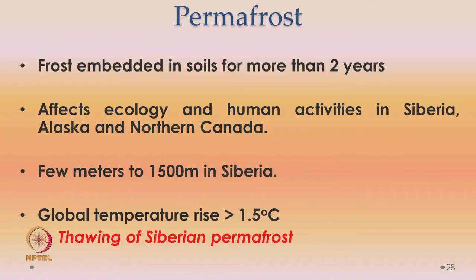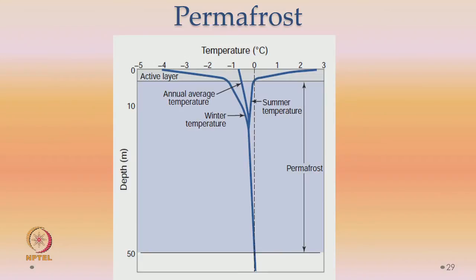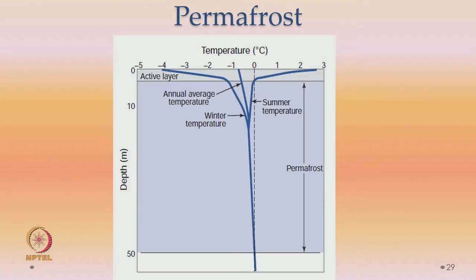If a global temperature rise of more than 1.5 degrees centigrade takes place — which is not far off — then thawing of the Siberian permafrost takes place. This view graph tells you temperature versus depth. The summer temperature is on the right side, winter temperature on the lower side, and the average is in between. The average has to be less than 0 degrees centigrade for it to remain as frost. We have depicted permafrost up to 50 meters depth.